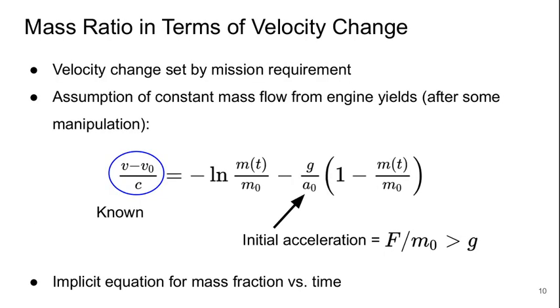We can write this non-dimensionally by bringing the c as a denominator to the other side. Now what velocity change we need is set by our mission requirements, for example if we're trying to get something into low Earth orbit. Because of our assumption, if we make an assumption of constant mass flow from the engine, after some mathematical manipulation we can get the following.